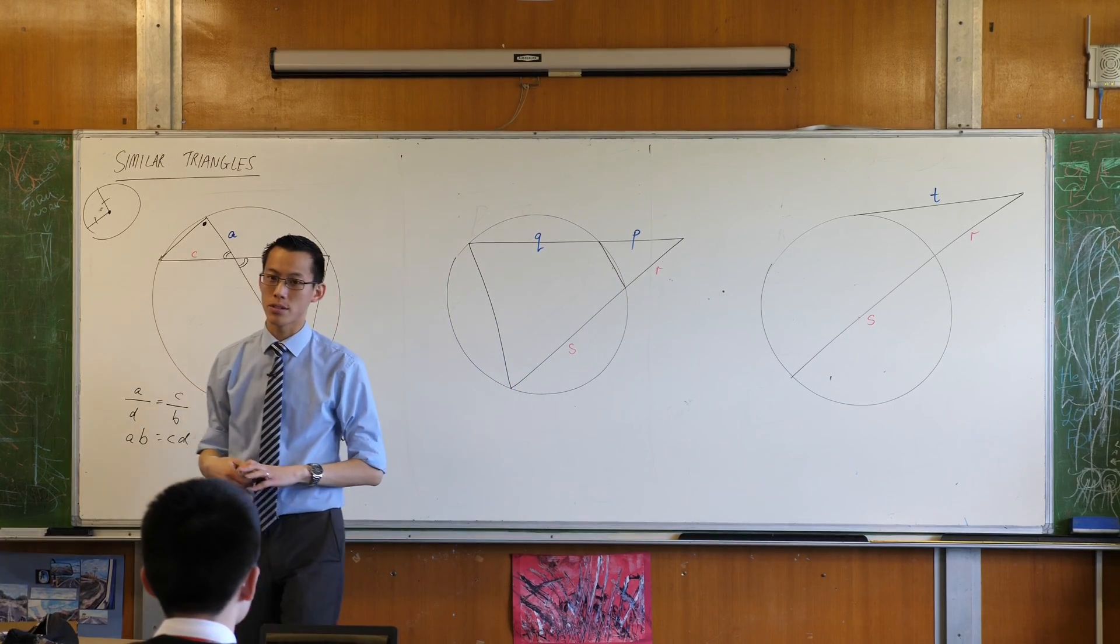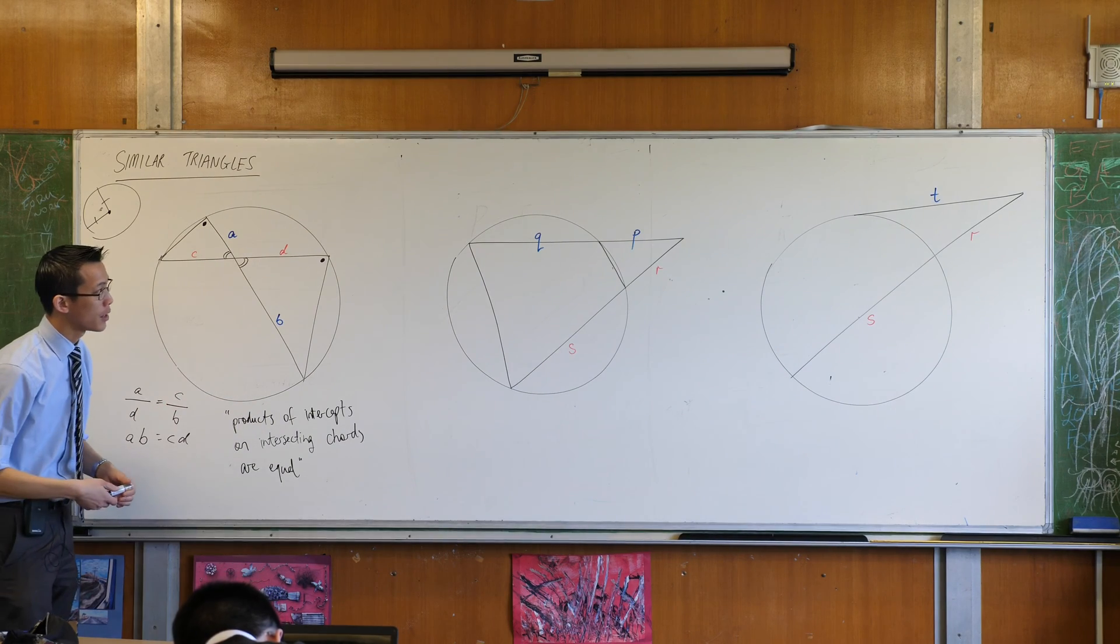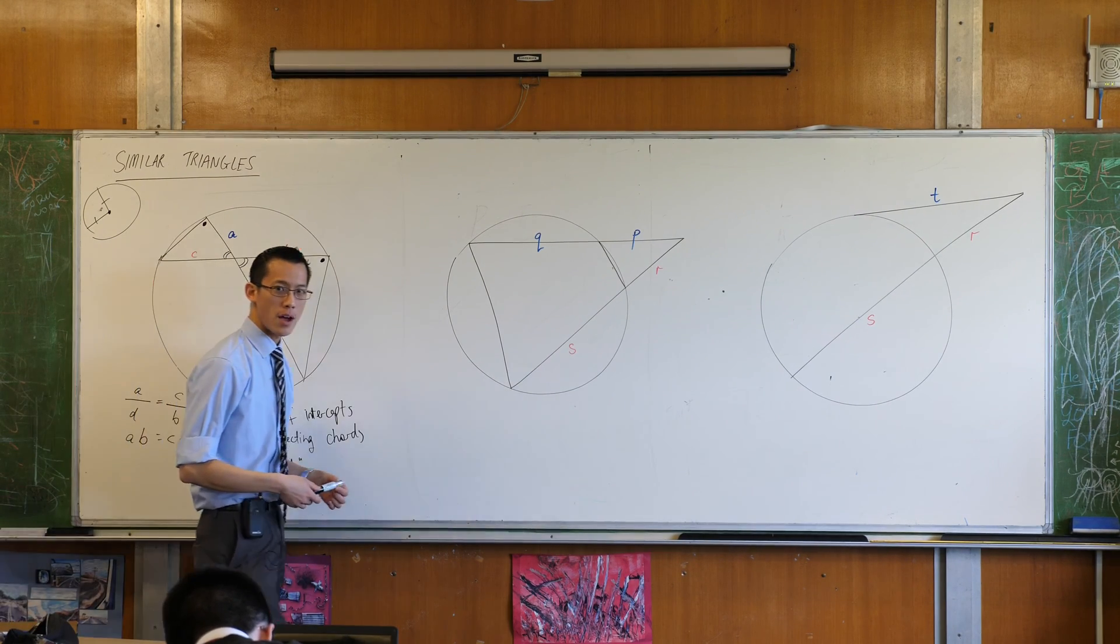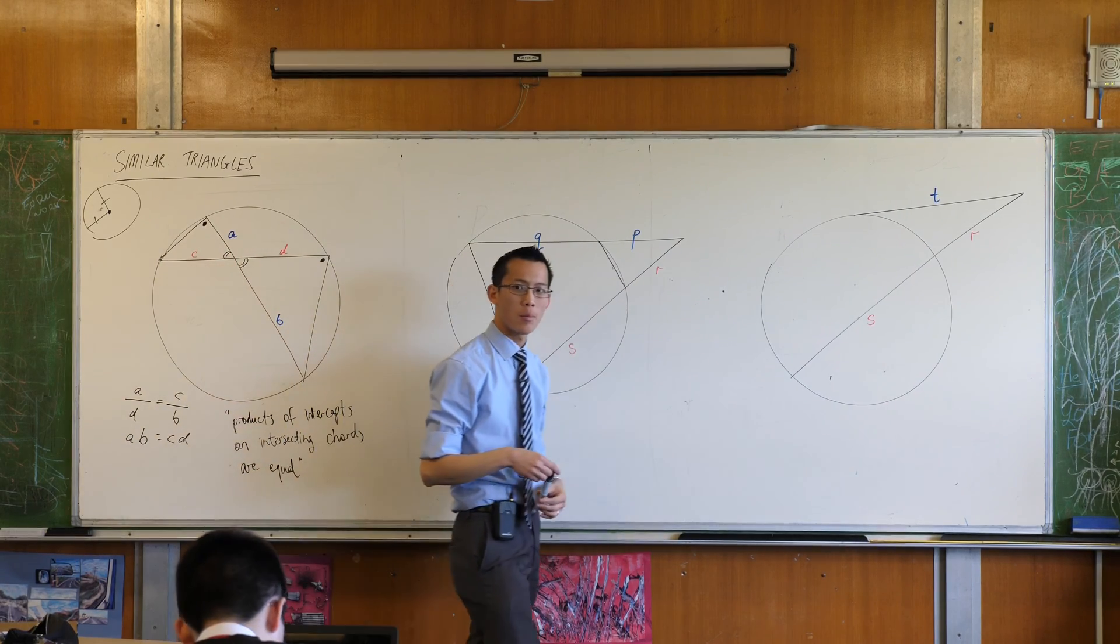Now there are similar triangles tucked away inside this diagram just like there were over here. Where are they? They're not facing each other like this. These ones are trickier. What's the relationship?